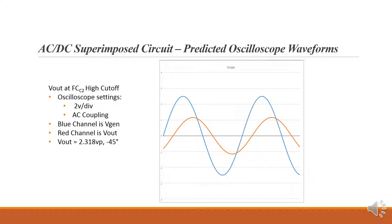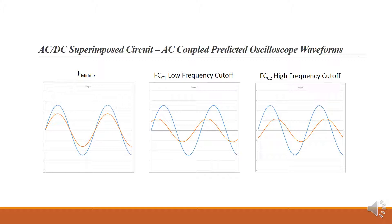At the high cutoff frequency FC2, the blue channel is the generator and the red channel is the output — 2.318 volts peak lagging the generator by 45 degrees. Viewing all waveforms side by side: at F middle we're in phase; at both cutoff frequencies the amplitude is down to 70.7% of mid band; at low cutoff we lead by 45°; at high cutoff we lag by 45°.